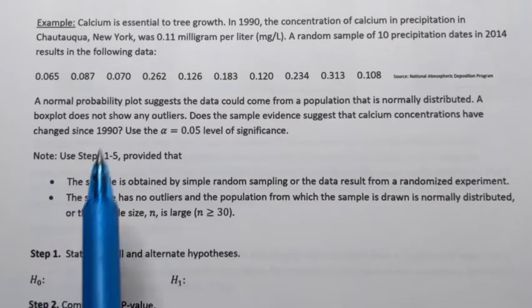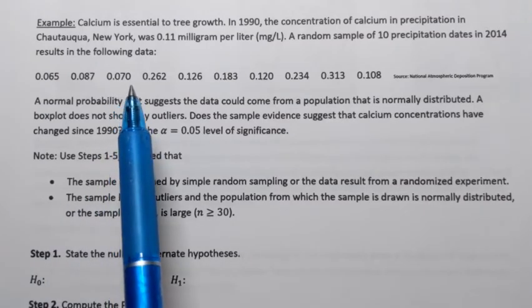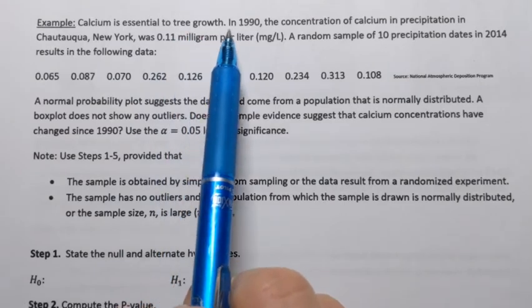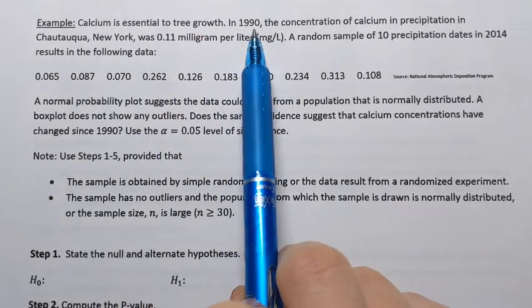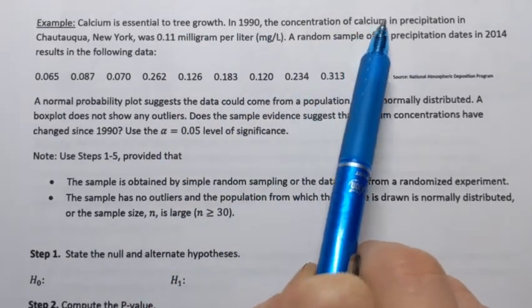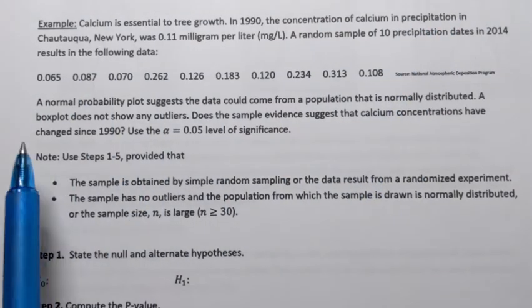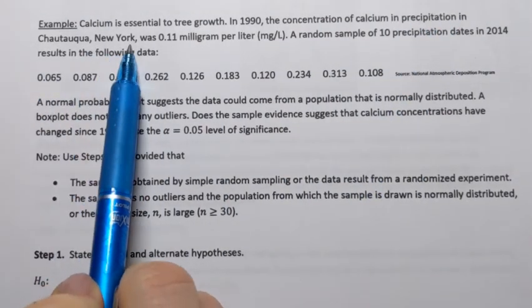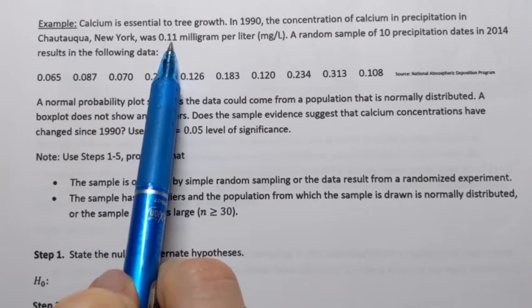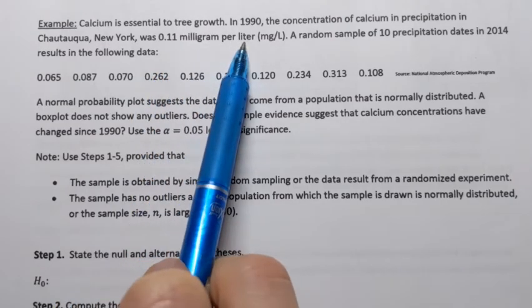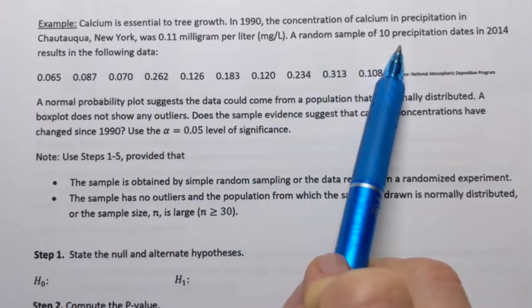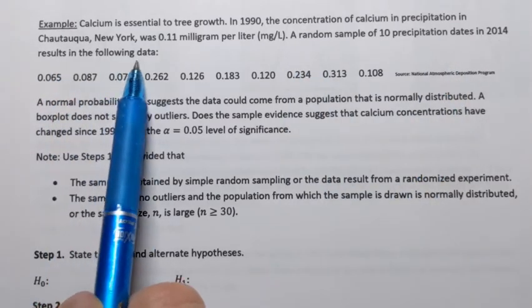Let's try the following example. Calcium is essential to tree growth. In 1990, the concentration of calcium in precipitation in Chautauqua, New York was 0.11 milligram per liter. A random sample of 10 precipitation dates in 2014 results in the following data.